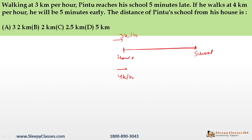There are two scenarios given. When Pintu moves at 3 km per hour, he takes T plus 5 minutes to reach school, where T is the correct on-time arrival. When he goes at 3 km per hour it takes T plus 5 minutes. But the speed is given in km per hour, so the time difference is in minutes. We need to convert 5 minutes into hours — dividing by 60 — so it becomes 1/12 of an hour.